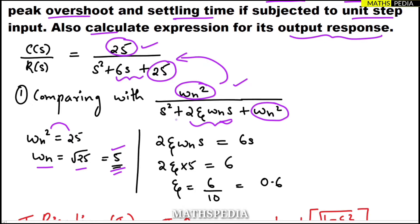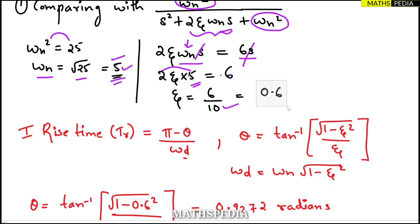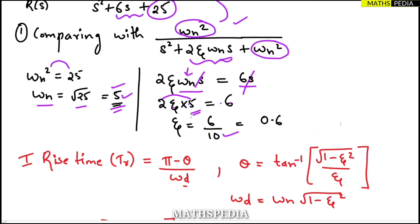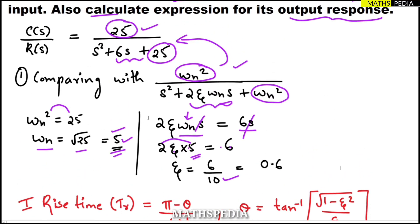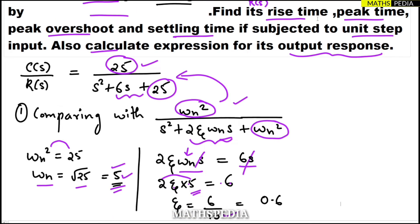Comparing 2·zeta·omega_n with 6: the s terms cancel, and substituting omega_n = 5 gives 2·zeta·5 = 6, so 10·zeta = 6, meaning zeta = 6/10 = 0.6. This is our damping ratio.